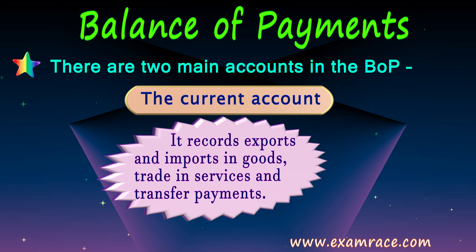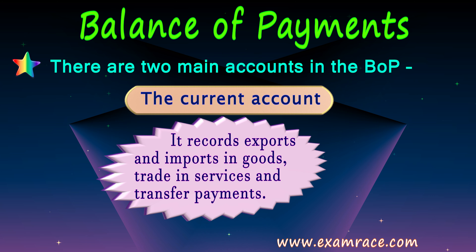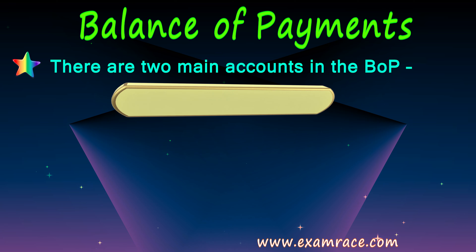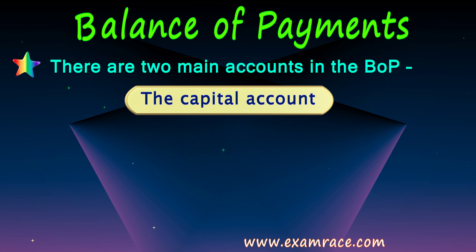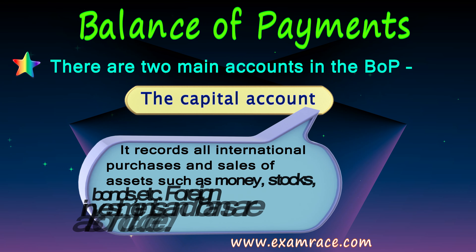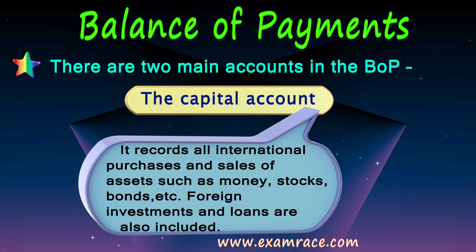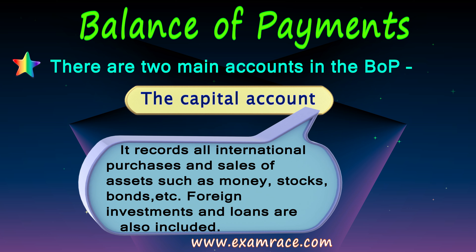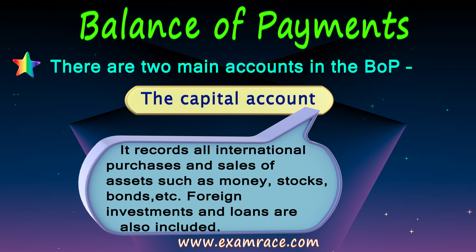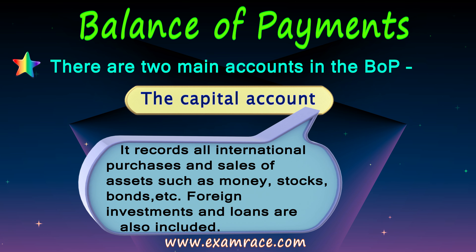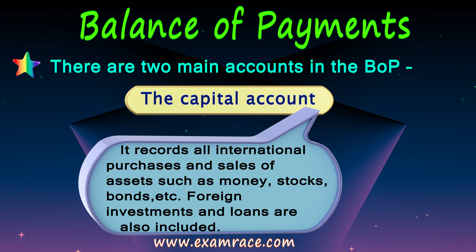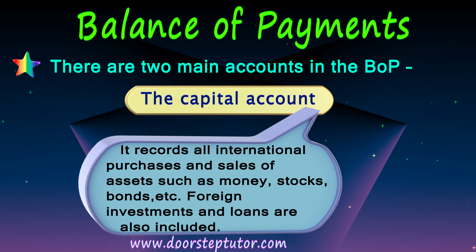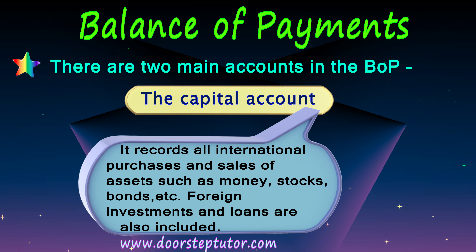Transfer payments include remittances one receives or pays, donations, aid, etc. All of them when added together form the current account. Then we have the capital account, which records all transactions pertaining to international purchase and sale of assets. Assets here implies stocks, bonds, money, property, etc. It tells us about foreign investments and loans — all of these are included in the capital account.